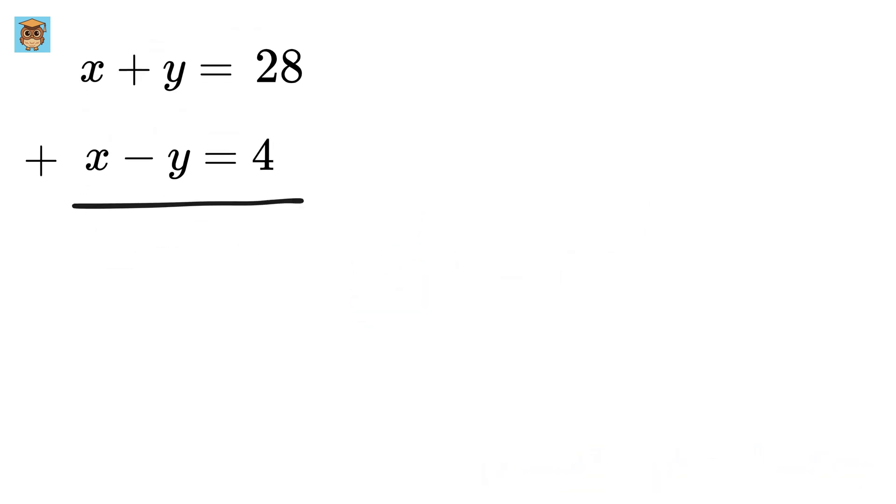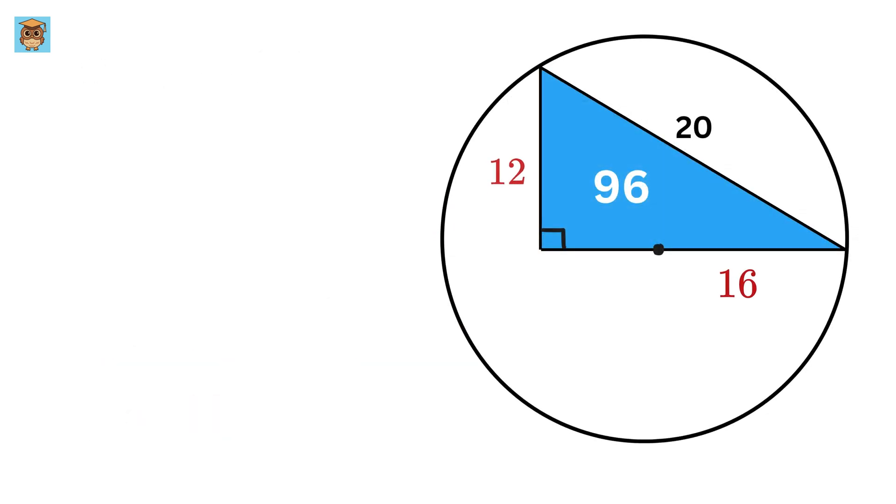Awesome. Now, add both of them together to get 2 times x equals 32, or x equals 16. Then, substitute it here to get y equals 28 minus x, or 28 minus 16, or 12. That is simply amazing!